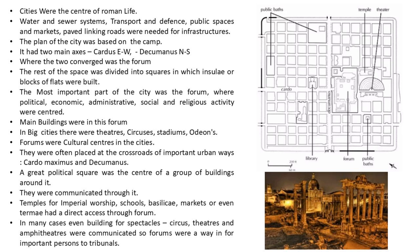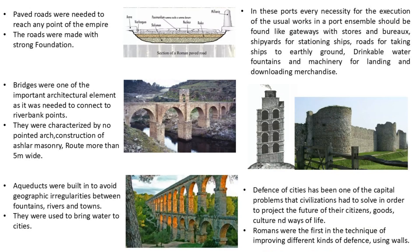In big cities there were theaters, circuses, stadiums and odeons. Forums were the cultural centers in cities, often placed at the crossroads of important urban ways — the Cardo Maximus or Decumanus. A great political square was one of the centers of the group of buildings around it. As you can see, these were the major elements of Roman town planning and architecture.